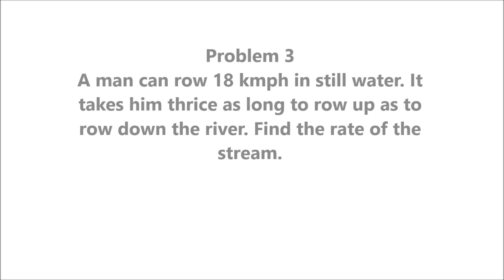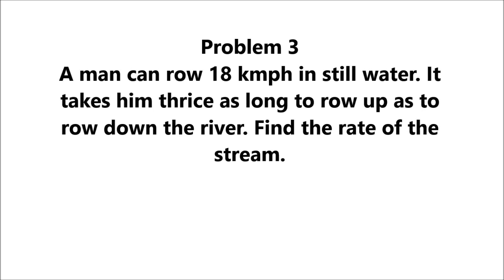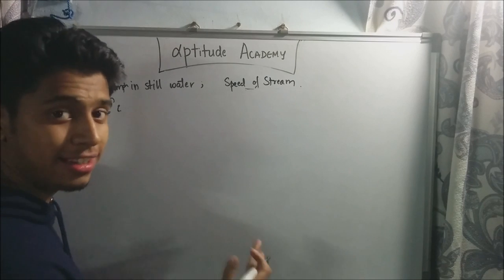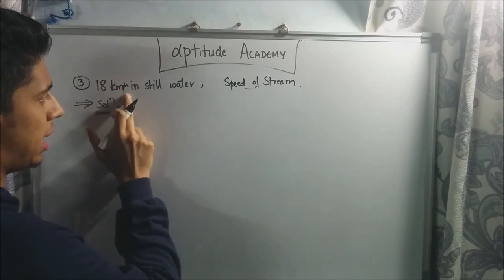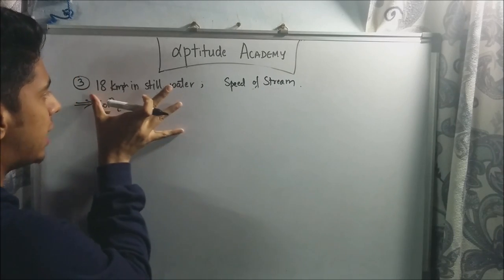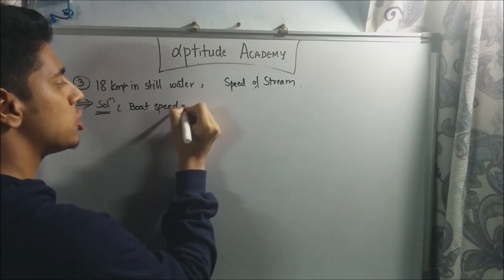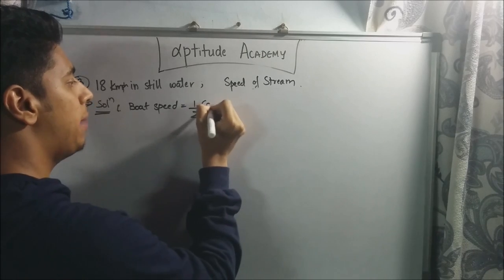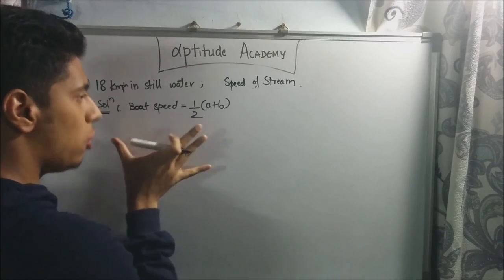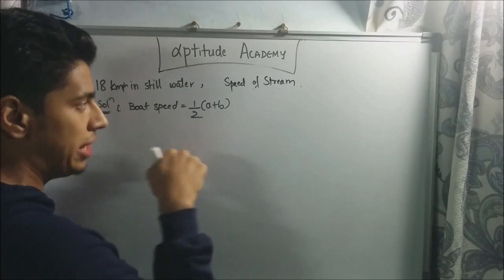Problem 3. A man can row 18 km in still water. It takes him thrice as long to row up as to row down the river. Find the rate of the stream. For the third sum, the speed of the boat is 18 km per hour in still water, and they've asked you to find the speed of the stream. The shortcut formula for boat speed is half A plus B, where A is the downstream speed and B is the upstream speed. They've also given that the time taken upstream will be thrice the time taken downstream.